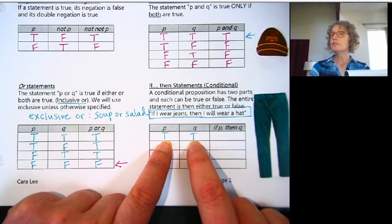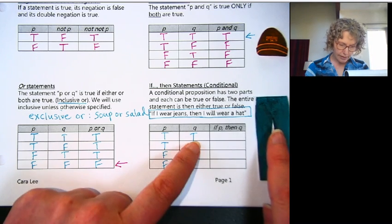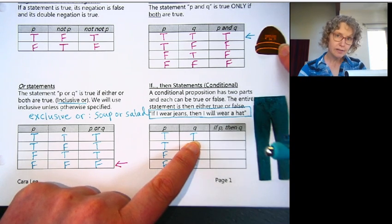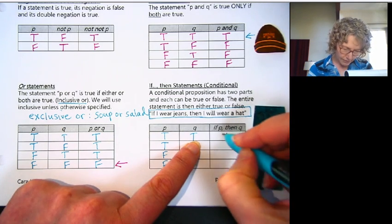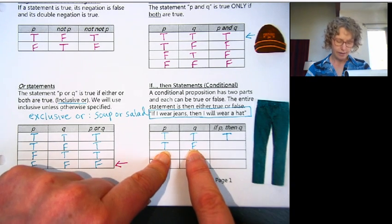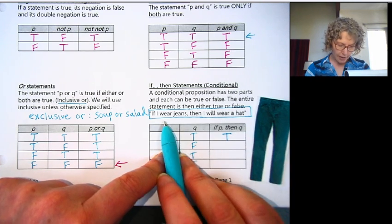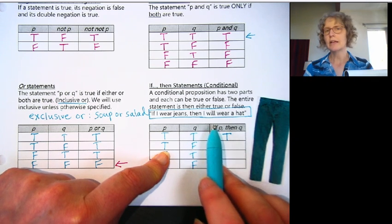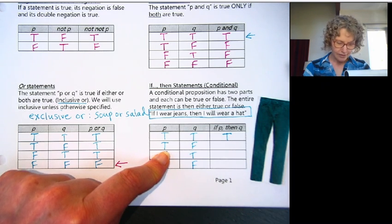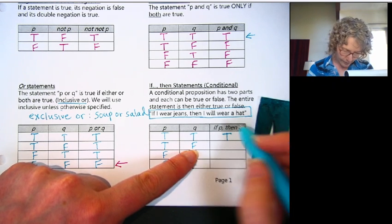Jamie says if I wear jeans, then I'll wear a hat. P is true, so they are wearing jeans, and Q is true, so they are wearing a hat. So if Jamie wears jeans, then they'll wear a hat. That's true, because they're wearing jeans and a hat. In the second line, Jamie's wearing jeans but not a hat. So Jamie said if I wear jeans then I'll wear a hat. Is that true? Did they tell the truth? No, because they wore jeans but not the hat. The if part has to be true—if that's true, then the then part has to be true. So that is false.